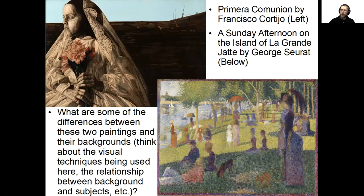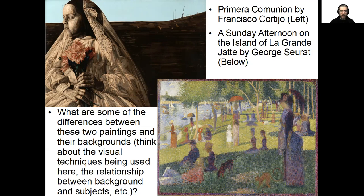In order to help you think about these issues, I'd like you to explore a pair of paintings. We'll tie the ideas behind the questions pertaining to these paintings into setting. Every work of art — whether a visual work, a film, a short story, or a novel — has a kind of setting, a kind of background context. Take a look at these two radically different paintings in two radically different styles. Pause the video and think about the differences between these paintings and their backgrounds, the visual techniques used, and the relationship between background and subjects.